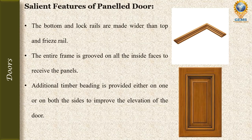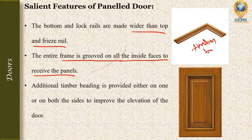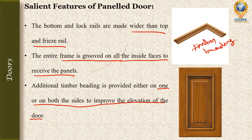The bottom and lock rails are made wider than the top and frieze rails. The entire frame is grooved on all sides to receive the panels. Timber beading is provided either on one or on both sides to improve the appearance and elevation of the door — if you want to give a better look, you may add timber beading.